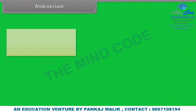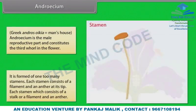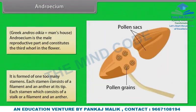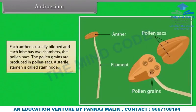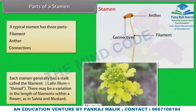Androsium is the male reproductive part and constitutes the third whorl in the flower. It is formed of one to many stamens. Each stamen consists of a filament and an anther at its tip. Each anther is usually bilobed and each lobe has two chambers called pollen sacs. The pollen grains are produced in pollen sacs. A sterile stamen is called staminode. A typical stamen has three parts: filament, anther, and connective. There may be variation in the length of filaments within a flower, as in Salvia and mustard.